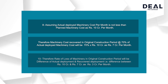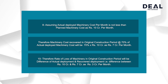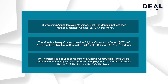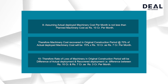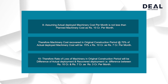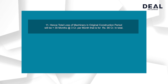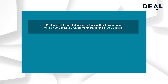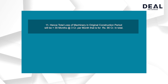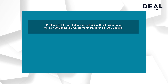Therefore, the rate of loss of machinery in the original construction period will be the difference of actual deployment and recovered deployment, i.e. difference between Rs. 10 crore per month and Rs. 7 crore per month, which is Rs. 3 crore per month. Hence, total loss of machinery in the original construction period will be 30 months at the rate of Rs. 3 crore per month, i.e. Rs. 90 crore in total.